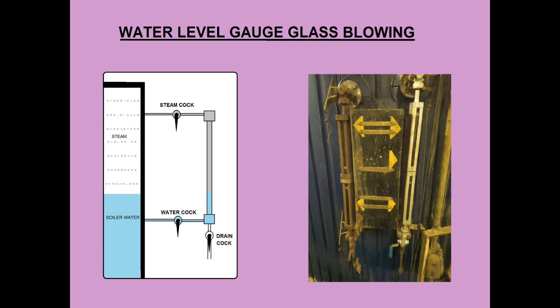First open the water cock. The water must rise up to the top of the glass gradually. This is because the steam trapped on top of the glass gets condensed, and due to the formation of a vacuum, water rises to the top. Then open the steam cock; now the water in the glass must fall to the level of the water in the boiler.